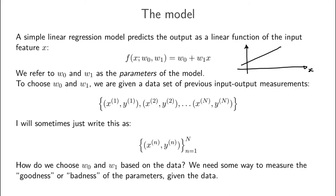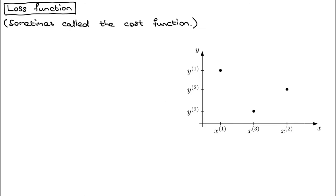We need some way to measure how good or bad a particular setting of these parameters is given the data. So that brings us to the loss function. The loss function, which is also sometimes called the cost function, should tell us how good a particular setting of the parameters is. If we have a low loss, we know that we have a good set of parameters, and if the loss is high, then we know that we've got a bad set of parameters. The loss function is something that we should choose or design to match the problem that we're trying to solve.